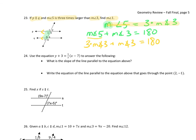Combining like terms: three times the measure of angle 3 plus one times the measure of angle 3 gives four times the measure of angle 3. So 4 times the measure of angle 3 equals 180. Divide by 4: the measure of angle 3 equals 45 degrees.